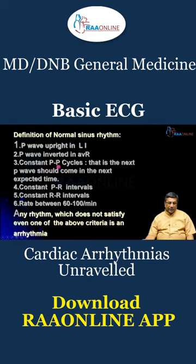There are six criteria to diagnose sinus rhythm on a regular ECG. The first and foremost, most important thing is that the P wave has to be upright in L1, and it has to be inverted in aVR.